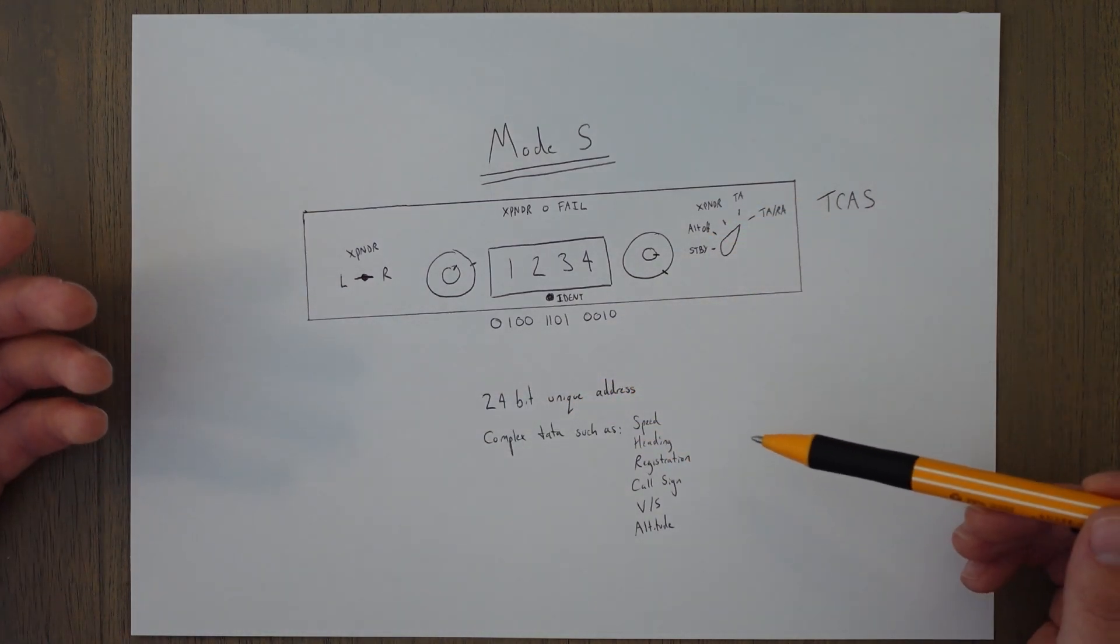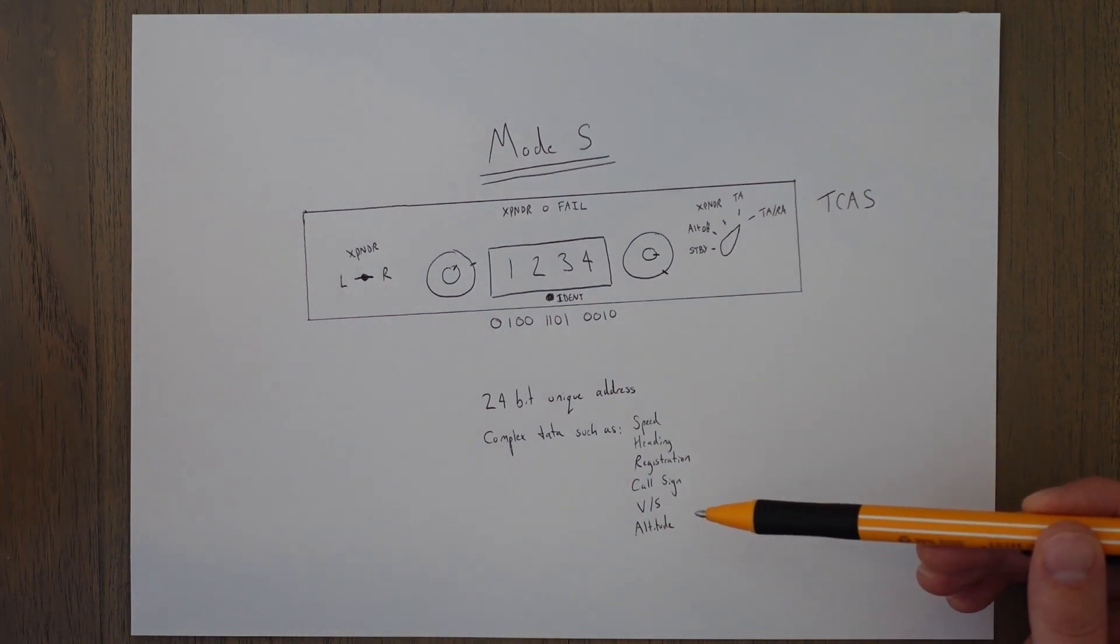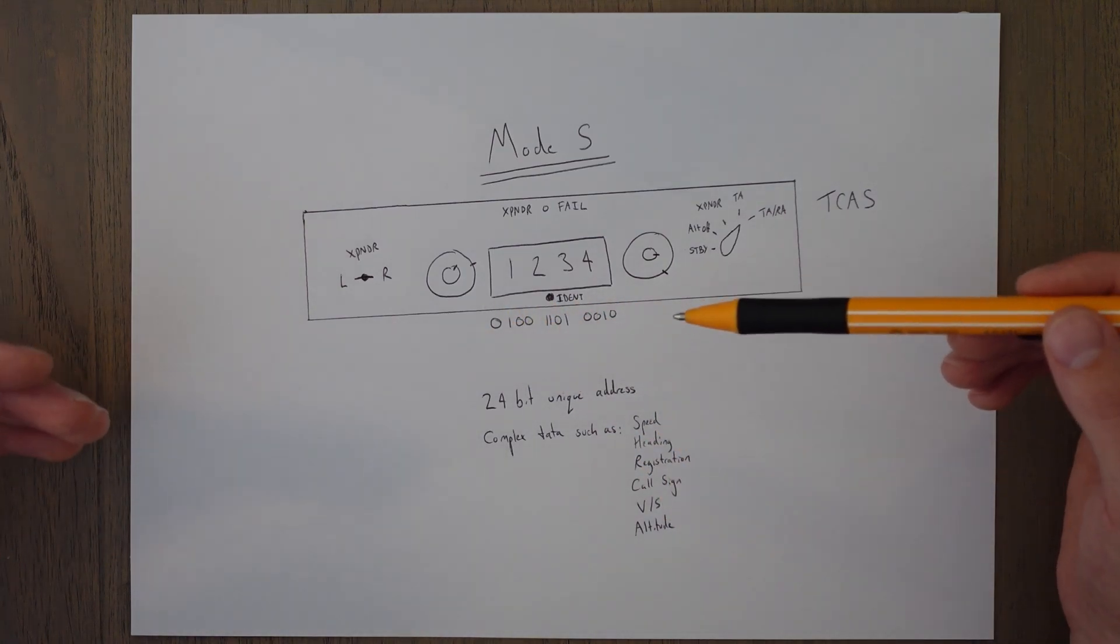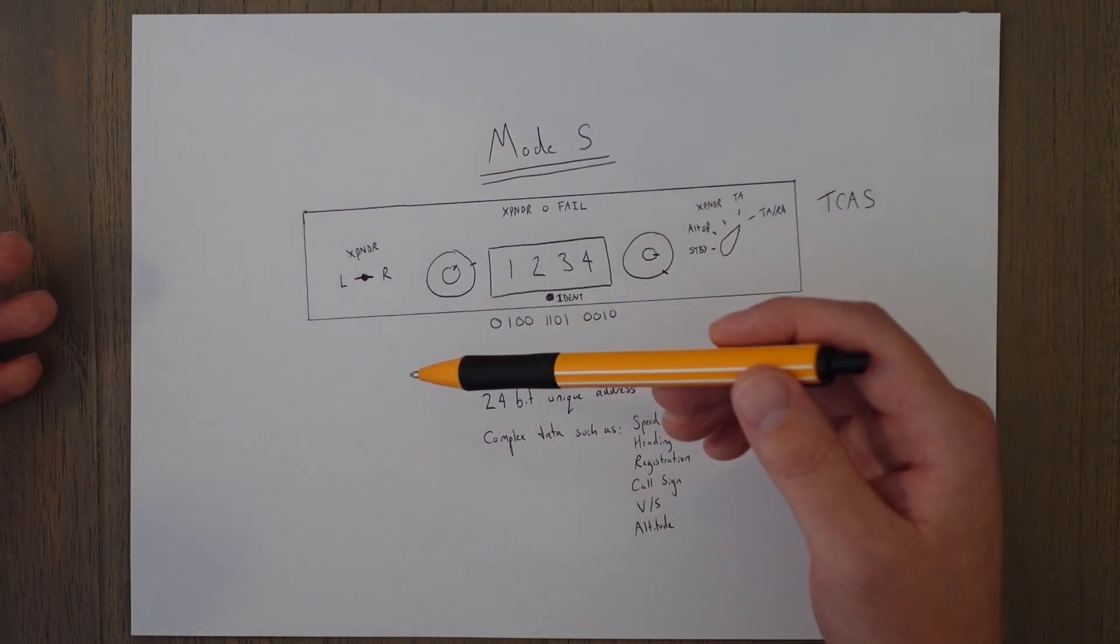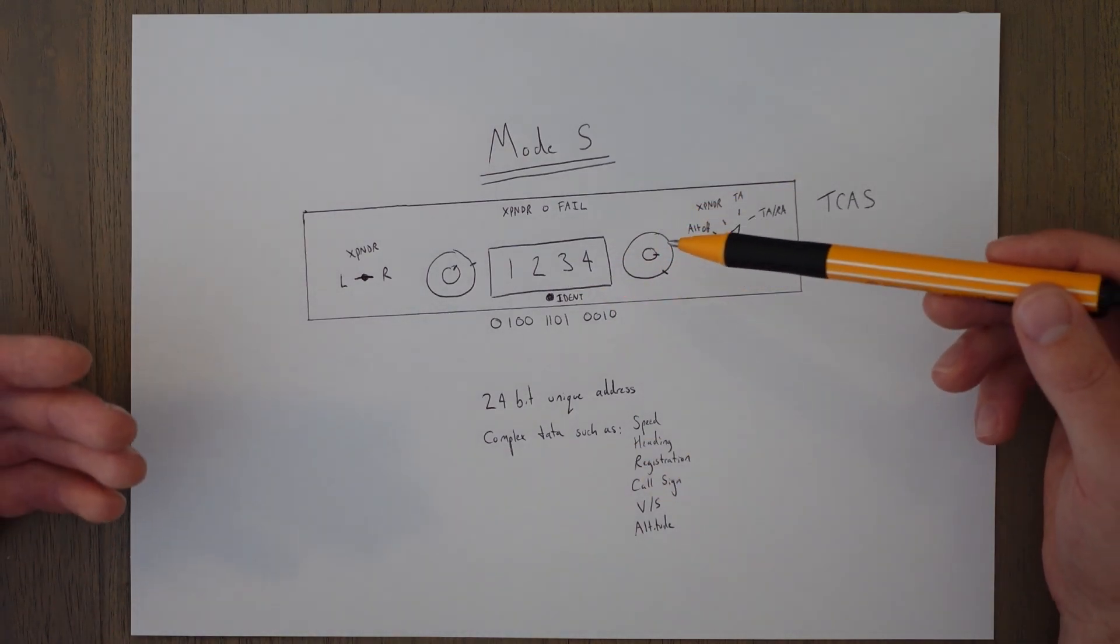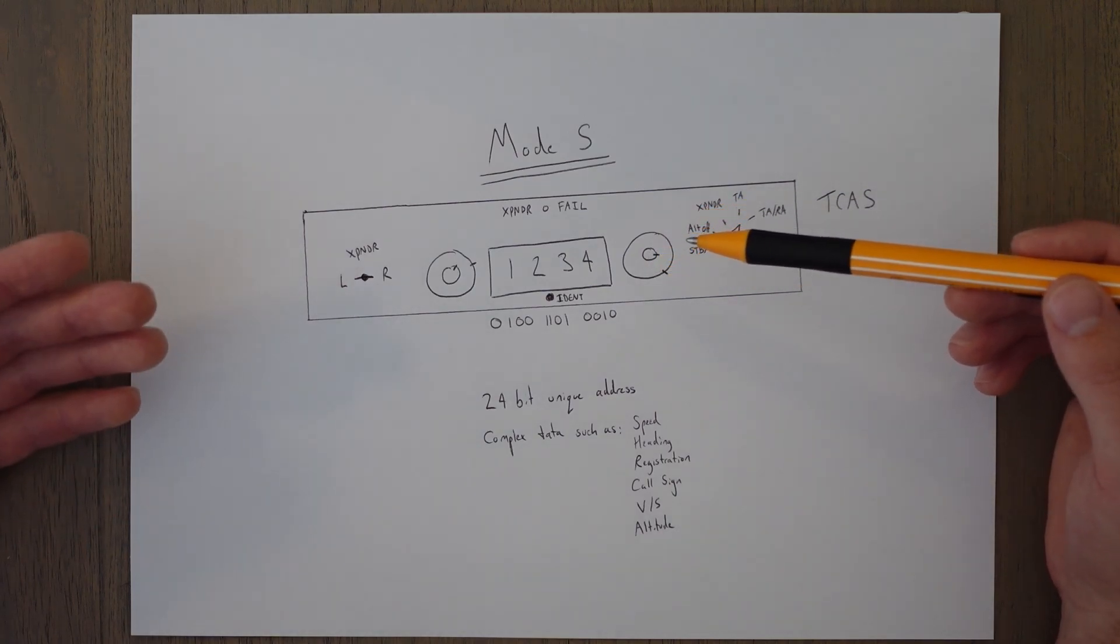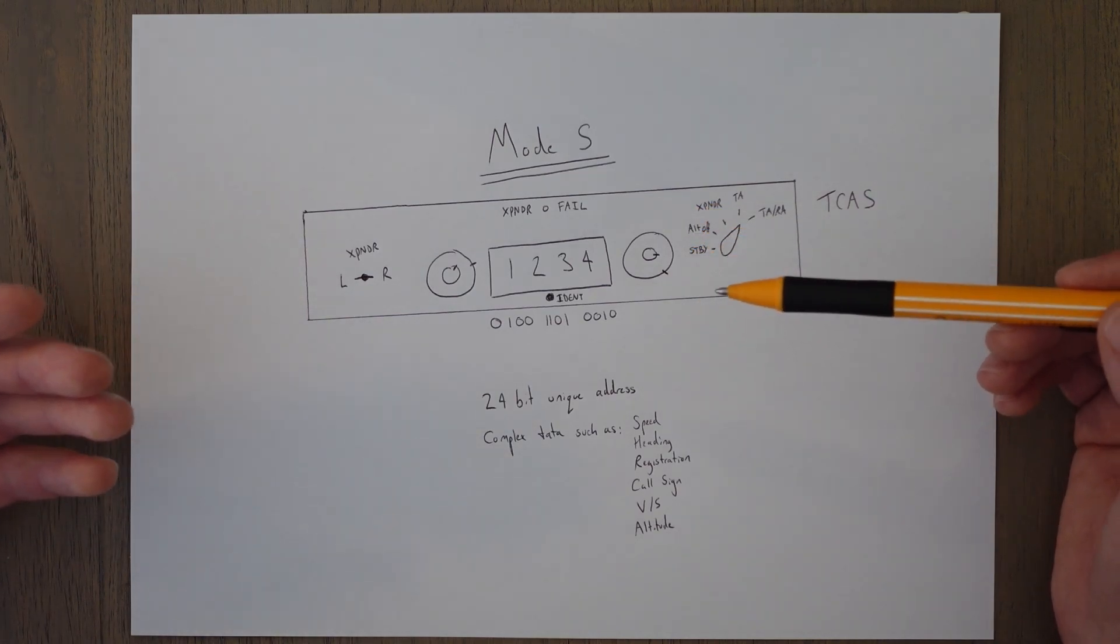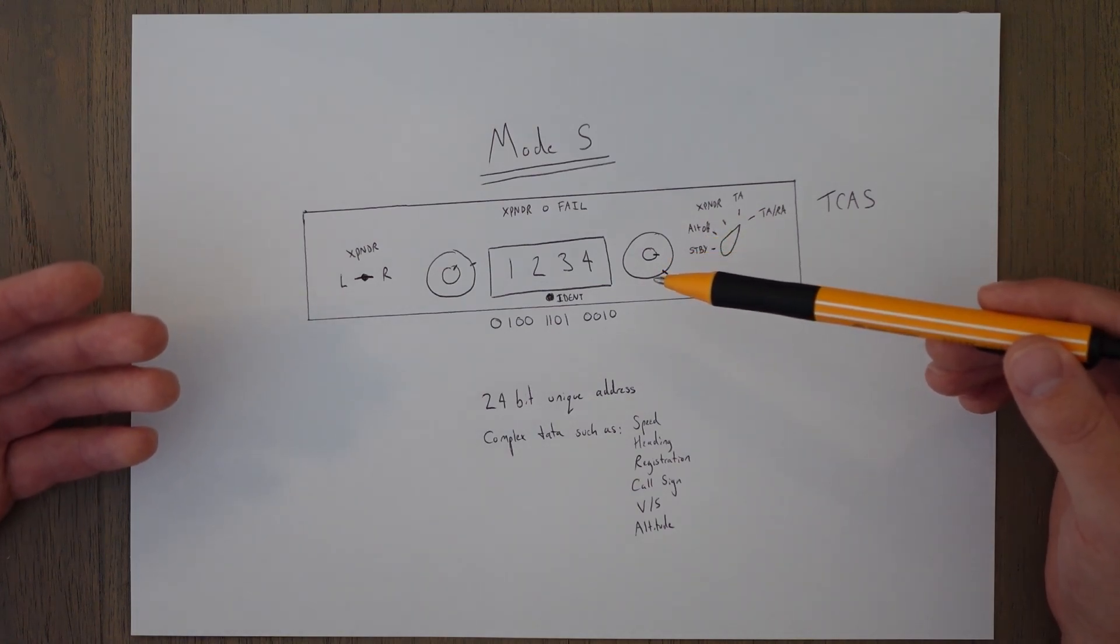This allows for more complicated information to be transmitted and received. The most common information is to do with speed, heading, aircraft registration, the call sign, the vertical speed, the altitude, and of course that four-digit code. The Mode S transponder uses the same frequencies as Mode A and Mode C, so Mode S is backwards compatible. A ground station that only has Mode A capability will still be able to receive at least the four-digit code selected on the Mode S transponder. And yes, the Mode S transponder still has the availability to select a four-digit code even though it's got those 16 million plus other codes, and it's primarily for that backwards compatibility and also because of those very useful emergency codes that we all learn about.